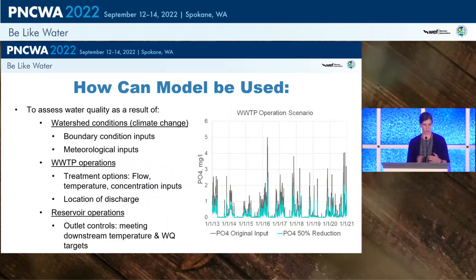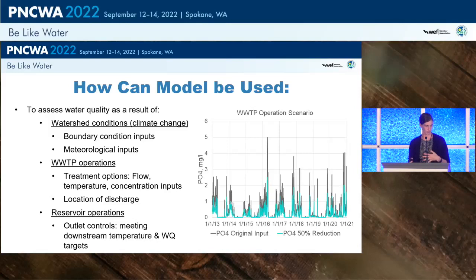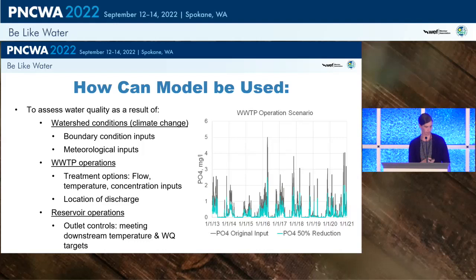Both models — the first order and the sediment diagenesis — have been calibrated and can be used by Clean Water Services to assess water quality as a result of both watershed conditions, such as changes from climate change affecting temperatures or flows, and wastewater treatment plant operations. An example on the right shows the original orthophosphate input versus a potential scenario with a 50% reduction in orthophosphate — we would use the reduced time series as inputs and compare to our original calibrated model. We can also use the model to look at different reservoir operations and how changing outlet controls might allow us to meet downstream temperature and water quality targets.